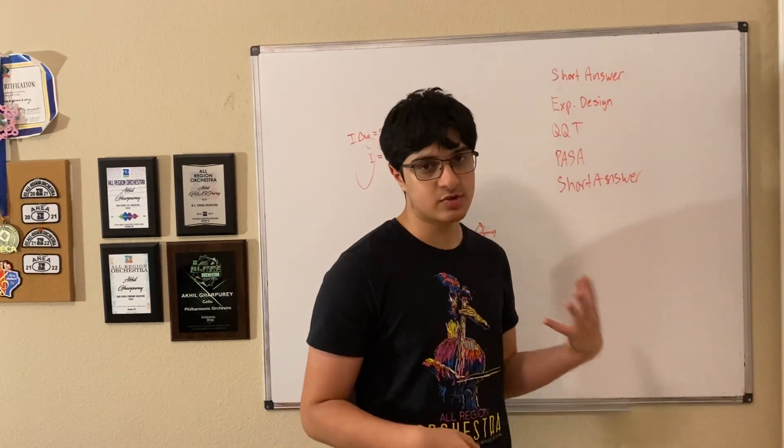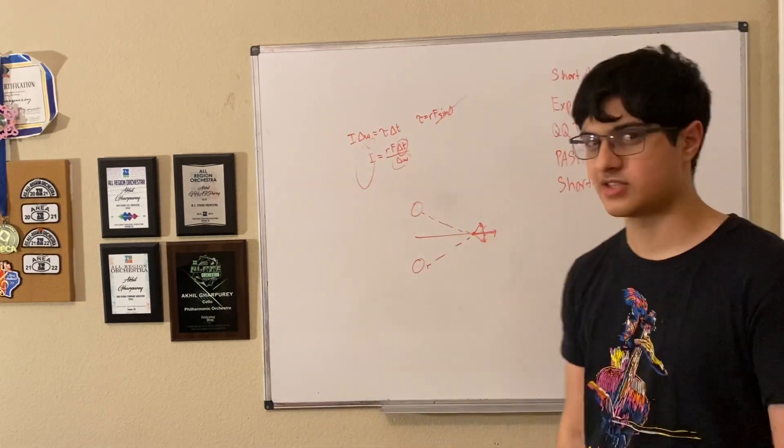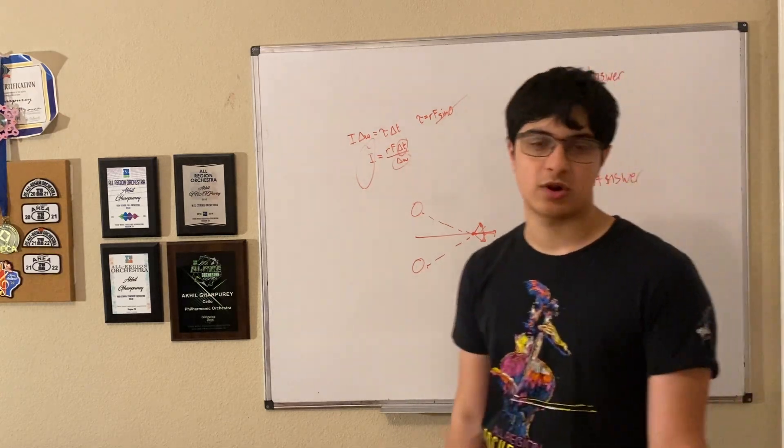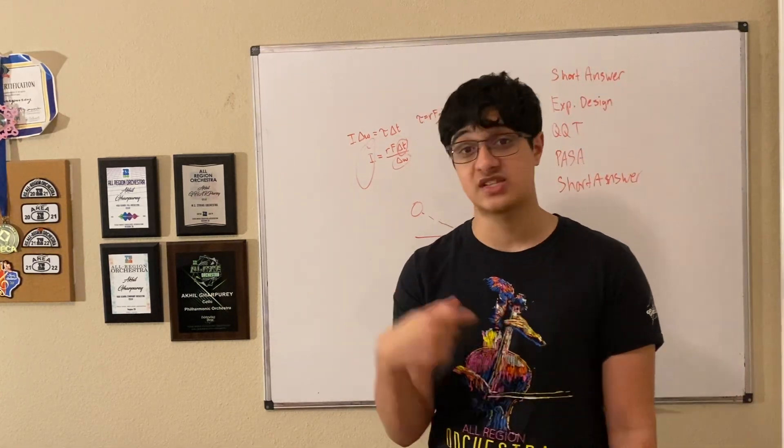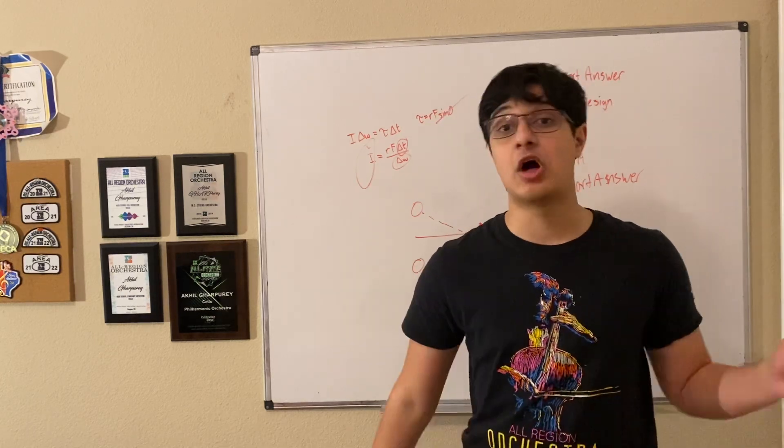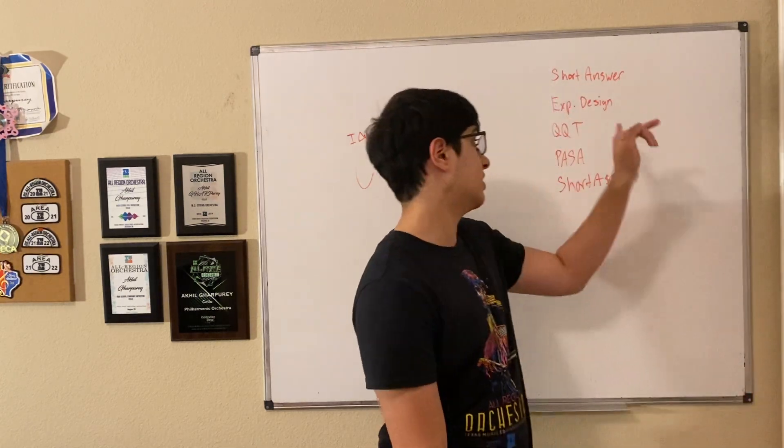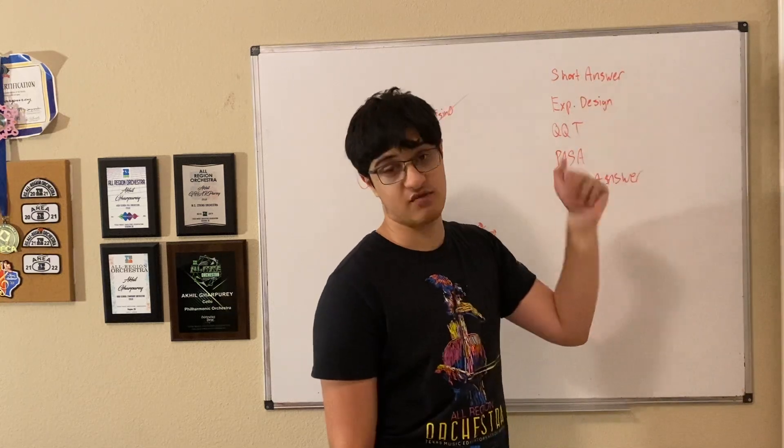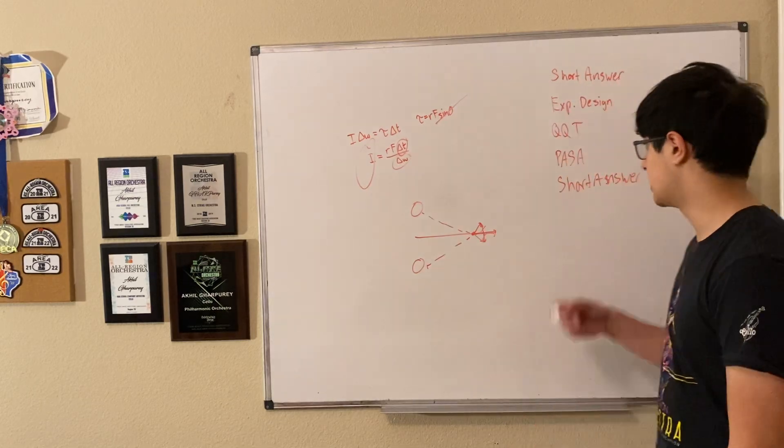And if you can also tell how one quantity changes with respect to time, or how one quantity changes with respect to another quantity, then you will be pretty well set on the quantitative qualitative translation problems. Again, this description is pretty vague of the qualitative quantitative translation problem. Just look through some examples. I can guarantee the MIT workbook has one, and look through past College Board FRQs. They will help a lot with quantitative qualitative translation, experimental design, short answers, and paragraph argument short answer, which I will get to.